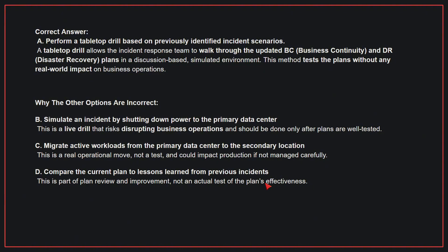Why the other options are incorrect? B. Simulate an incident by shutting down power to the primary data center — this is a live drill that risks disrupting business operations and should only be done after plans are well tested. C. Migrate active workloads from the primary data center to the secondary location — this is a real operational move, not a test, and could impact production if not managed carefully. D. Compare the current plan to lessons learned from previous incidents — this is part of plan review and improvement, not an actual test of the plan's effectiveness.